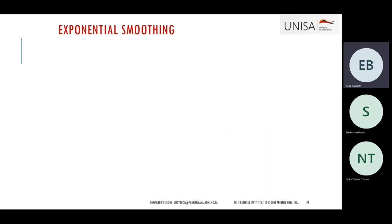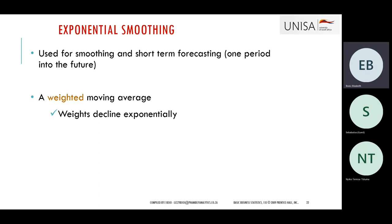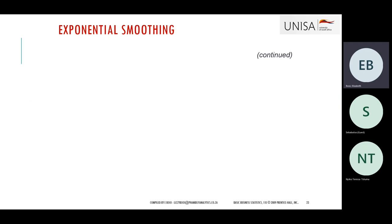Now let's look at exponential smoothing, which is different from the moving average. It is used for smoothing and can also be used for short-term forecasting, especially when looking only one period into the future. It uses a weighted moving average where the weight declines exponentially. The most recent observation will be weighted most. We use a coefficient called w — check your module for the exact symbol used.